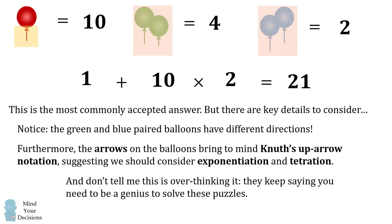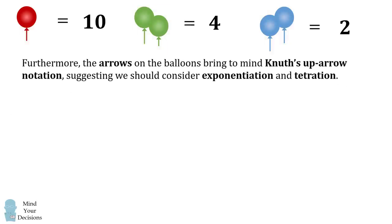So how does this affect the final answer? Well, first consider the pair of green balloons. If we let a single green balloon be represented by the variable X, this translates into X left superscript of X is equal to 4. How do we interpret this notation?